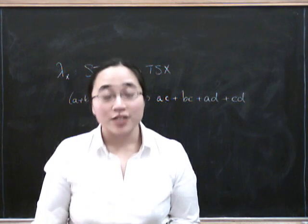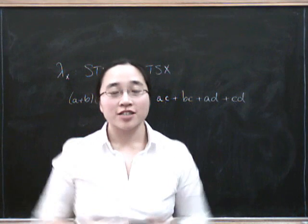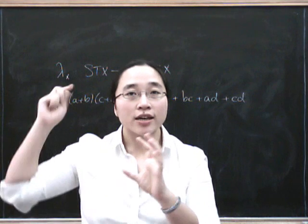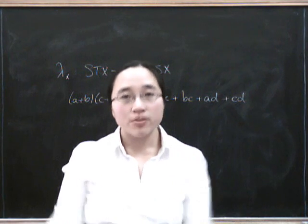We're now going to look at the abstract story behind our favorite example that we've just seen. Remember our favorite example of a distributive law is about combining monoids and groups to make rings.